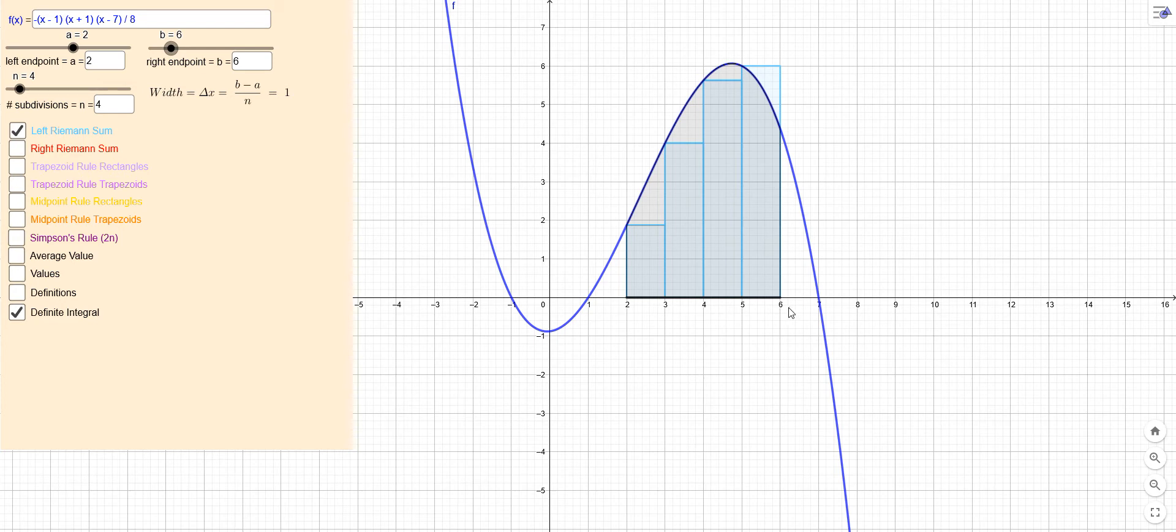Now we don't necessarily have to divide these up into evenly spaced widths, but for this method that's what we're going to do. And for a left Riemann sum that's what we're going to do. So notice that the widths are called delta x, and they're all the same. In this case they're all length of one.